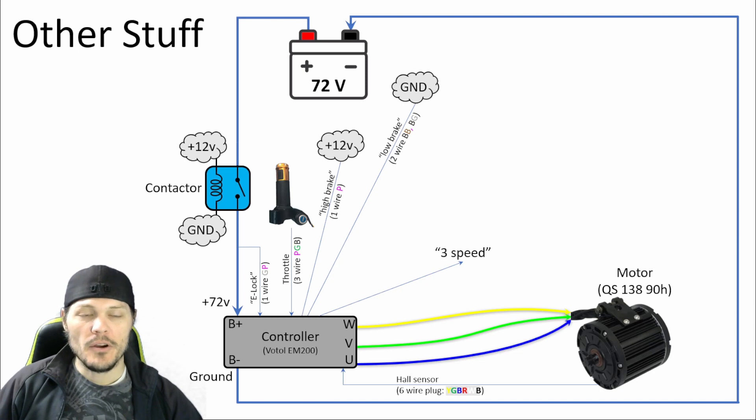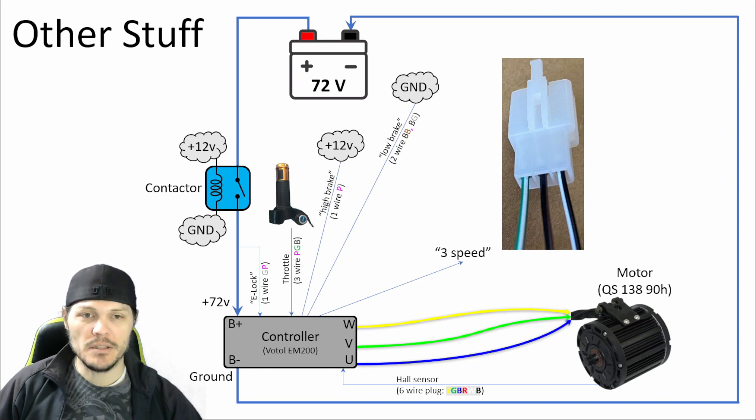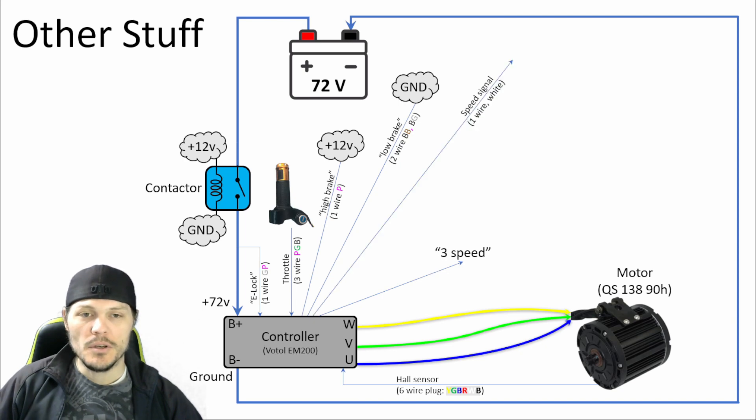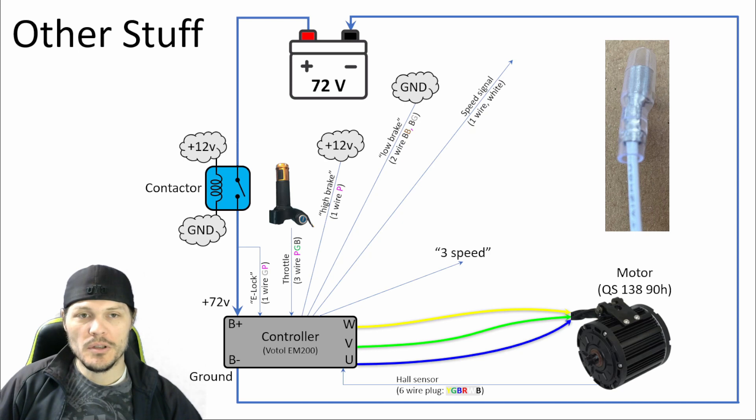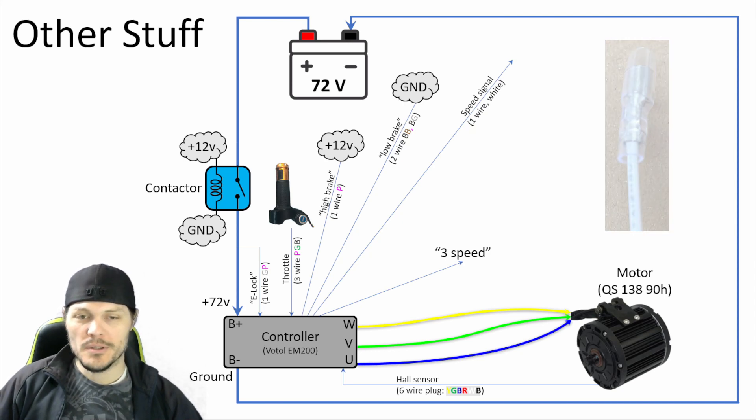Another one of the pigtails on the harness is called the three speed. That enables low speed versus high speed, and if you don't do anything, it's medium speed. My current plan is to just set that up for high speed, so I have the full power of the system anytime, and I can just modulate with the throttle. But that's something I can always adjust in the future. Speaking of speed, there's a wire that comes out of the controller harness. The speed signal. It's just a single wire. It's a white wire. Where does that go? Well, it was a good time to talk about the display.